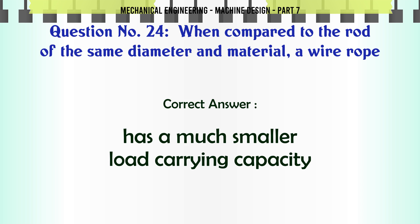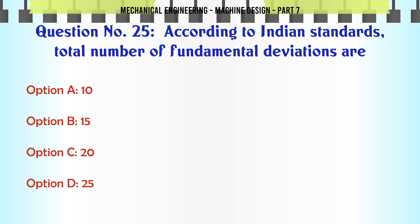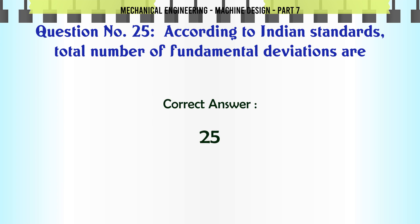According to Indian standards, the total number of fundamental deviations are: a) 10, b) 15, c) 20, d) 25. The correct answer is: 25.